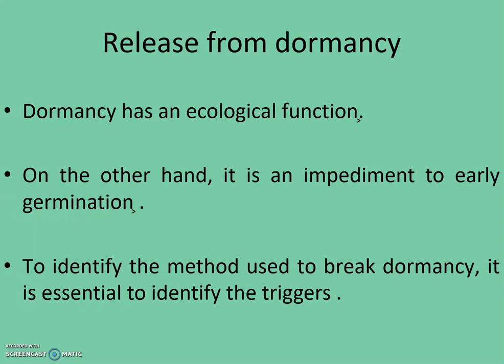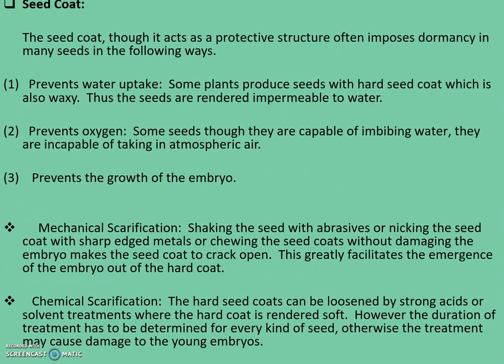Intrinsic factors include hardness and impermeability of the integument to water or gases, immature embryos, and inhibitors. Abiotic factors such as temperature, light, humidity, and substrate also play a role. To identify the method used to break dormancy, it is essential to identify the triggers for dormancy. Our first cause is the seed coat.